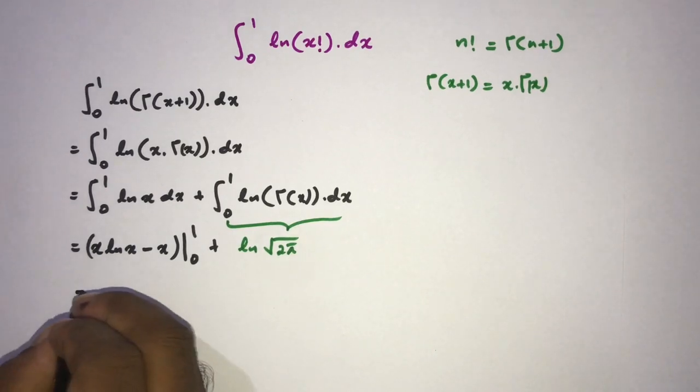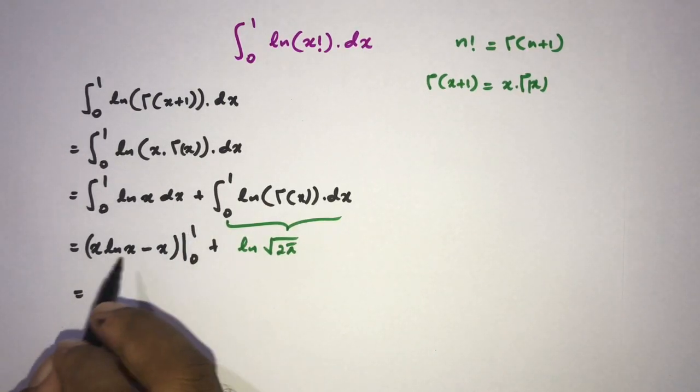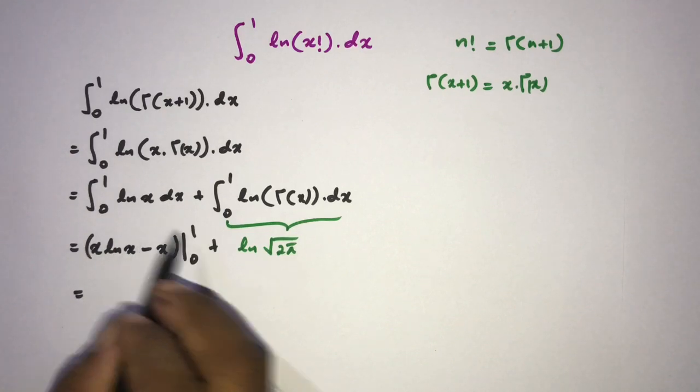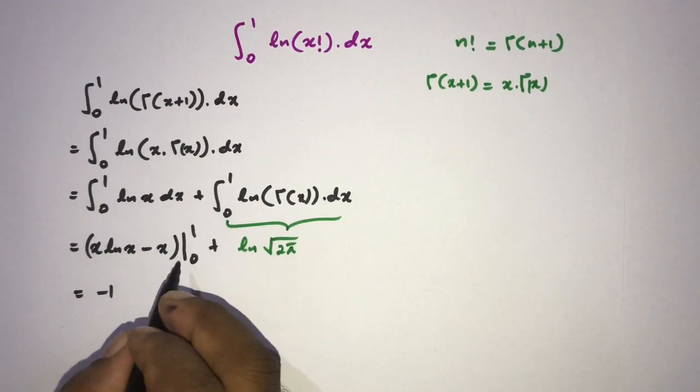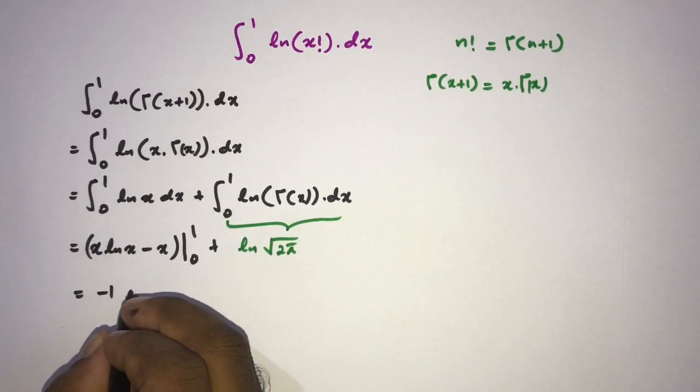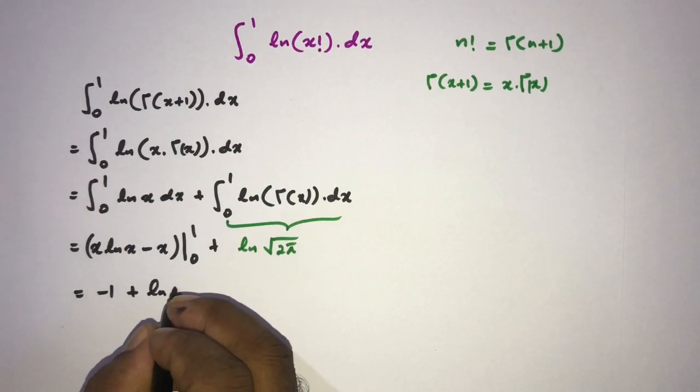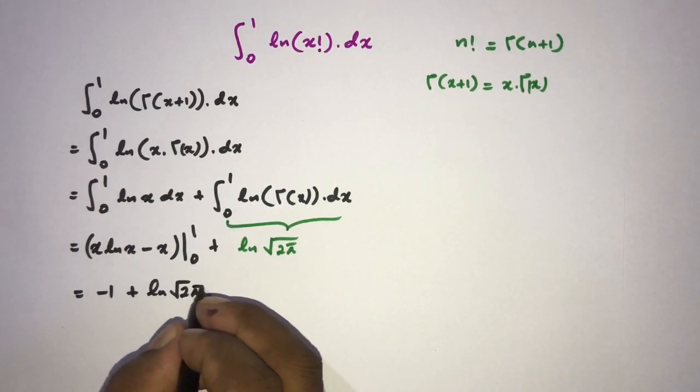Then here if we plug in upper limit 1, we know natural log of 1 is equal to 0, so minus 1. If we plug in 0, here 0, and here we have natural log of square root of 2 times pi.